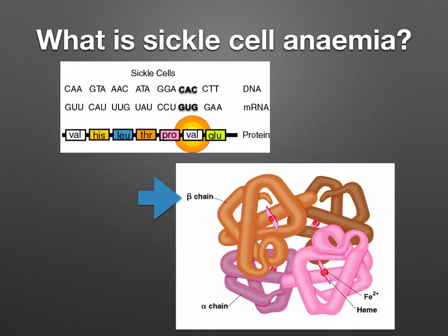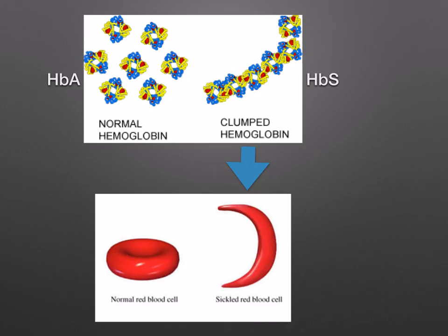If there's a base substitution in the DNA, the amino acid valine will be coded for when adenine has replaced thymine. This minor change will affect the beta chain of the hemoglobin molecule. Here you can see a normal hemoglobin molecule with four different chains — 2 beta and 2 alpha. The hemoglobin will therefore have a sticky patch, hence the name HbS.